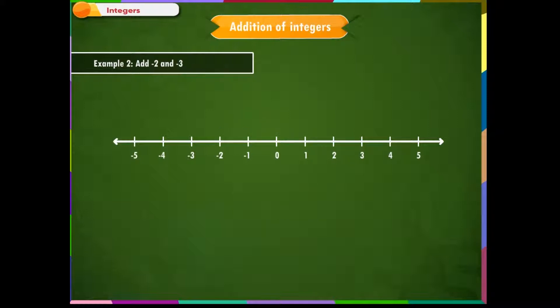Example 2: Add minus 2 and minus 3. We write this problem as minus 2 plus minus 3. Since we cannot write two signs one after the other, we put a bracket here. Using the number line, we first mark the first integer, that is minus 2. Since we are adding a negative integer, that is minus 3, we need to move three steps towards the left. We reach at minus 5. Therefore, minus 2 plus minus 3 is equal to minus 5.